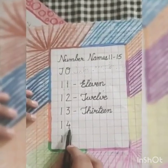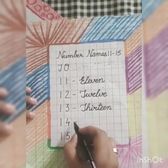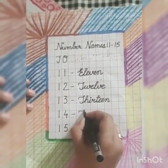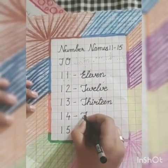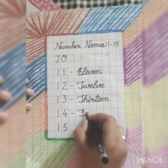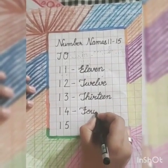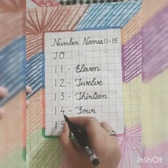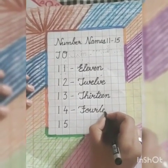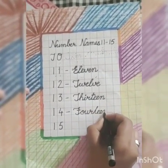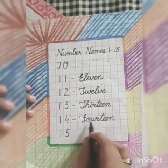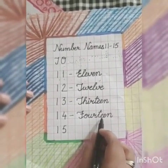Now we will write 14. For this, first of all, we will write cursive letter F. Dear kids, you all know very well the spellings of 4. What is the spelling of 4? Yes, F-O-U-R. Now, this is 1 for 14, so we will write teen with it. T-E-E-N. 14. F-O-U-R. T-E-E-N. 14.